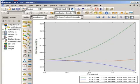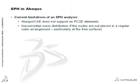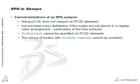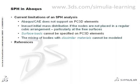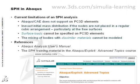Before concluding this short introduction to the Abaqus Explicit SPH capability, I will draw your attention to some of the current limitations. Besides the already mentioned lack of Abaqus CAE support and the potential inaccuracy of the initial mass distribution, note that surface loads cannot be specified on particle elements. However, you can transfer pressure from adjacent finite element surfaces onto the particle elements using contact interactions. The mixing of bodies with dissimilar materials cannot be modeled. SPH particles only interact with each other if they have been defined with the same section definition. More information can be found in the Abaqus Analysis Users Manual and in the SPH training material included in the Abaqus Explicit Advanced Topics course.